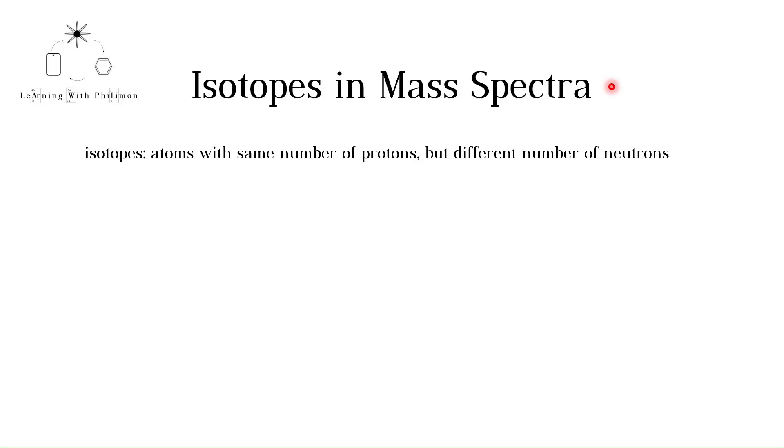Welcome to Learning with Philemon. In this video we will be taking a closer look at mass spectra, identifying the presence of isotopes in molecules. Elements can have isotopes, atoms with same number of protons but different number of neutrons.